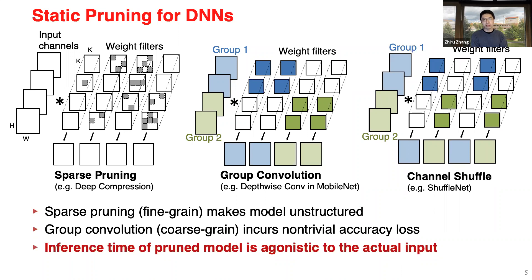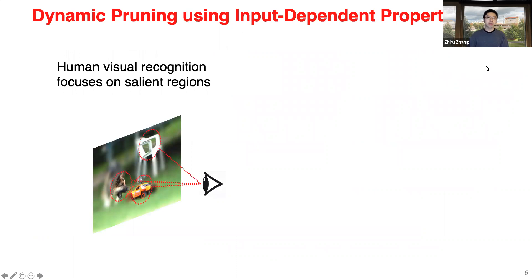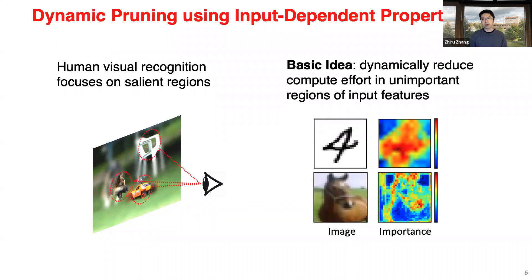This is probably not how our human visual system works. When I look at an image, in some cases I can immediately tell what's going on — what the key objects are. But in other cases, I may have to stare at the image for a few more seconds to figure out what's going on. The research question we are asking is: can we enable a similar phenomenon? Can we dynamically reduce the compute effort of our deep neural network when looking at images of different kinds?